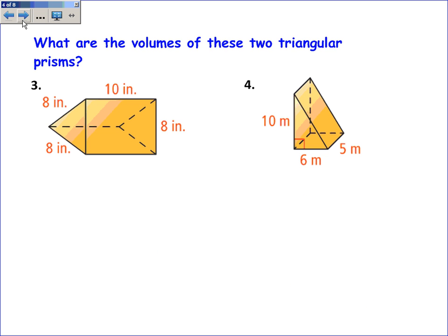For example, these triangular prisms, the bases are these triangles. The volume is still the area of the base times the height, but finding the area of the base isn't as simple as it was for the rectangular prism.